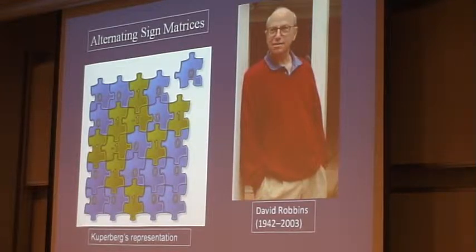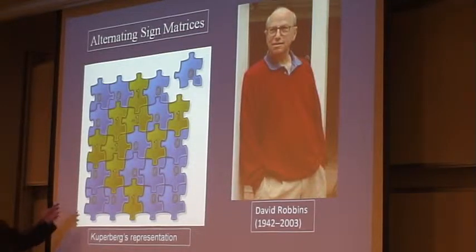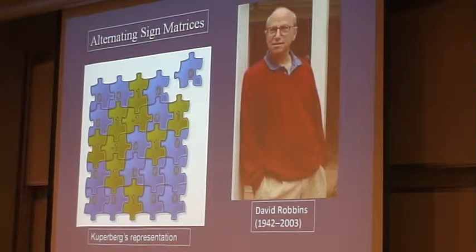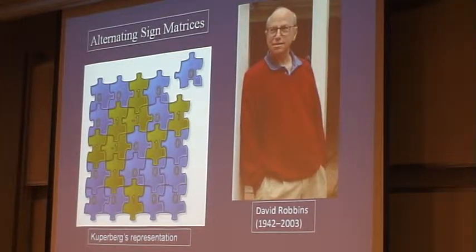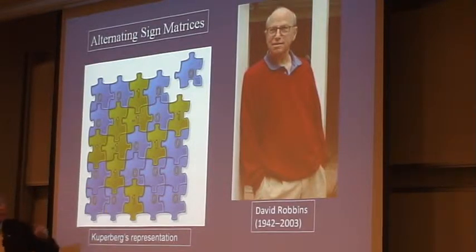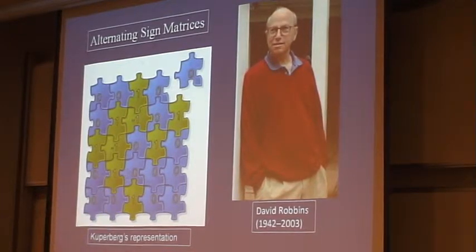This began, of course, with David Robbins' conjecture in 1980 about how the number of alternating sign matrices — n by n alternating sign matrices. I particularly like this representation of alternating sign matrices; it's Greg Kuperberg who came up with it. What we're looking at is a square matrix of zeros, ones, and minus ones, so you can view this picture as this jigsaw puzzle as such a matrix.